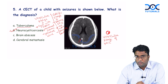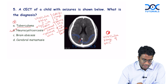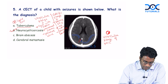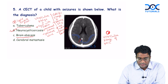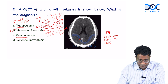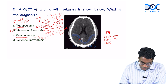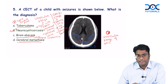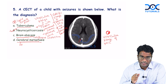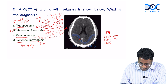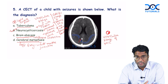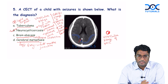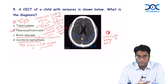Tuberculoma also has ring enhancing lesions, but shows multiple conglomerate ring enhancing lesions with a lipid lactate peak on MR spectroscopy. Brain abscess is also a ring enhancing lesion but shows diffusion restriction — bright appearance on diffusion weighted imaging. Metastases are ring enhancing lesions located at the grey-white matter junction of the brain periphery.